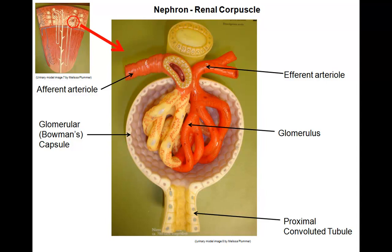The first step to urine processing, filtration, takes place here. The afferent arteriole being somewhat larger in diameter than the efferent arteriole allows more blood to flow into the glomerulus than can exit out the efferent arteriole. Blood pressure builds up and anything in the blood small enough gets filtered out and is collected as filtrate by the glomerular capsule. This filtrate leaves the renal corpuscle and enters the first length of the renal tubule, the proximal convoluted tubule, to begin the next step of urine processing.